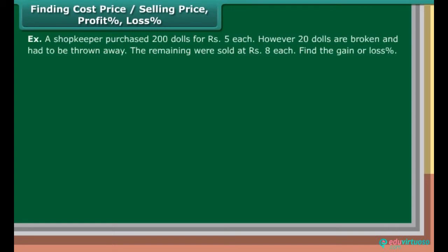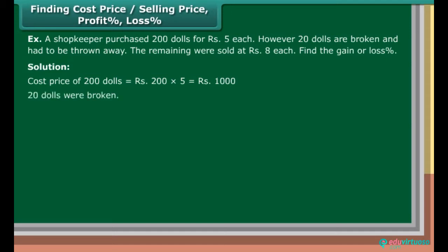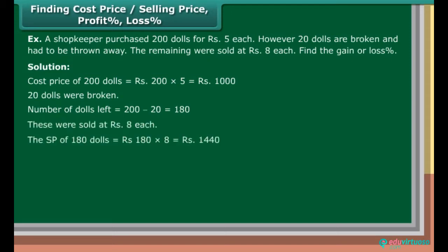Example: A shopkeeper purchased 200 dolls for Rs. 5 each. However, 20 are broken and had to be thrown away. The remaining were sold at Rs. 8 each. Find the gain or loss in percentage. Solution: Cost price of 200 dolls is equal to Rs. 200 into 5, which is equal to Rs. 1,000. 20 dolls were broken. Number of dolls left is equal to 200 minus 20, which is 180. These were sold at Rs. 8 each. The SP of 180 dolls is equal to Rs. 180 into 8, which equals Rs. 1,440.